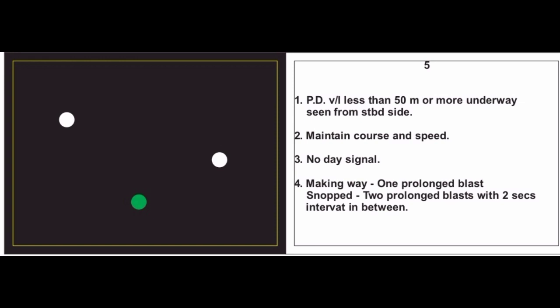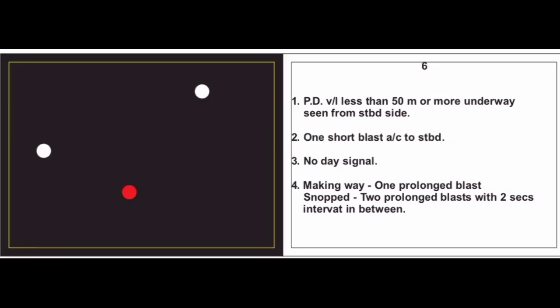Card 6: The card says starboard side but this is an error — it is actually a red light, so we are seeing the vessel from the port side. It is a power driven vessel 50 meters or more, underway. Action: one short blast, alter course to starboard. No day signal. Sound signal: making way — one prolonged blast; stopped — two prolonged blasts with two-second interval.